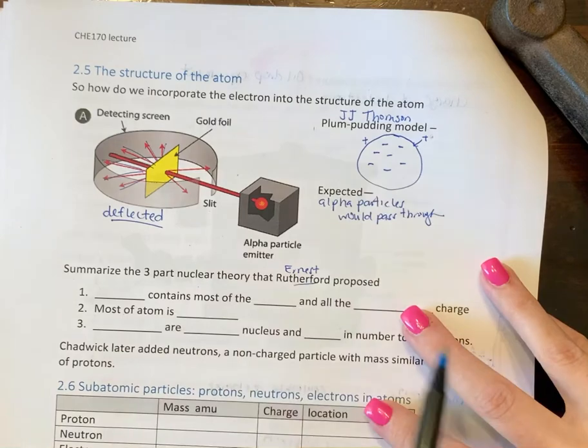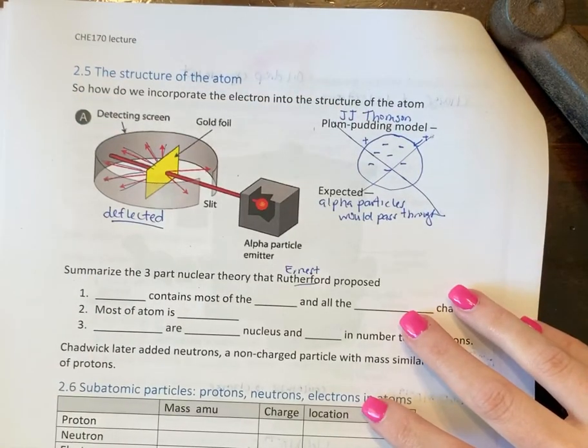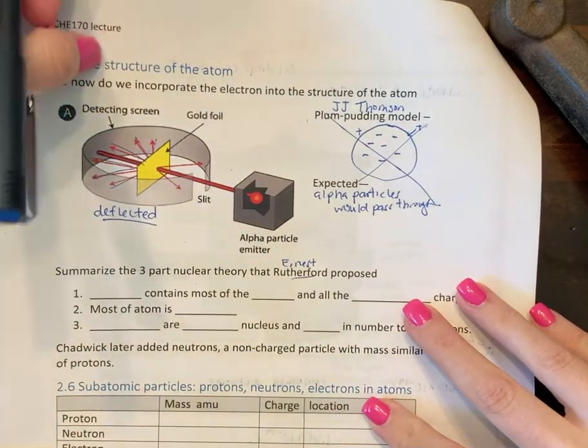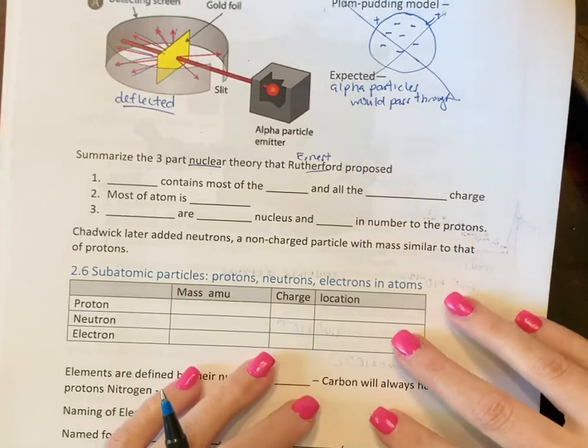If this was correct, so he said, okay, this is not the way it is, but good try. He won a Nobel Prize for this. So he came up with what we call nuclear theory. Ernest Rutherford.